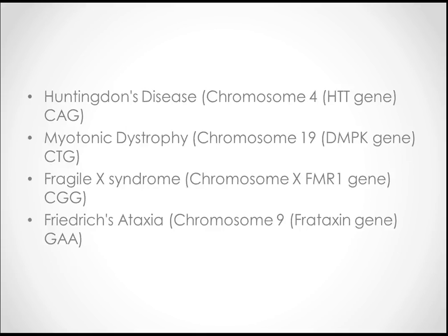These are the examples you should know: Huntington's disease — the repeats are CAG; Myotonic Dystrophy — CTG repeats on chromosome 19; Fragile X — chromosome X, FMR1 gene, CGG repeats. These are very important points. A video on Fragile X syndrome will be uploaded today or tomorrow.